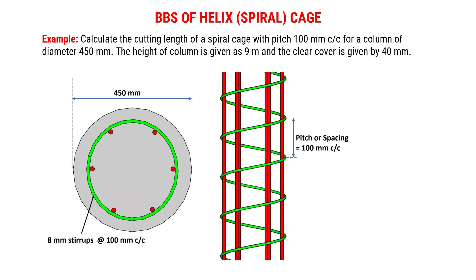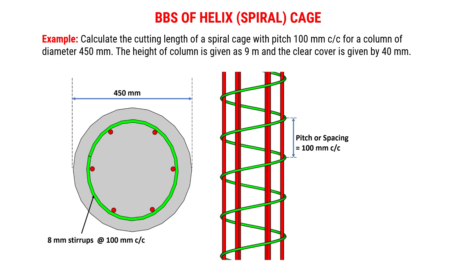Let's dive into an example to calculate the cutting length of a spiral cage for a column. We have a column of diameter 450 mm. Height of column is given as 9 meters.